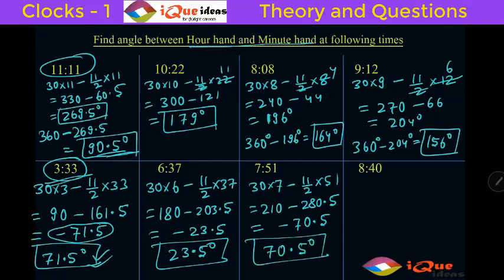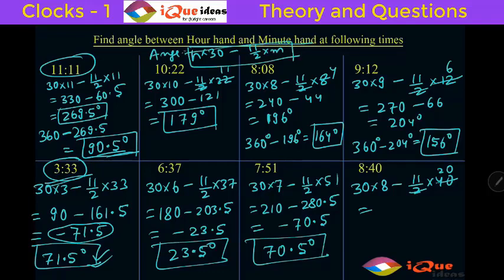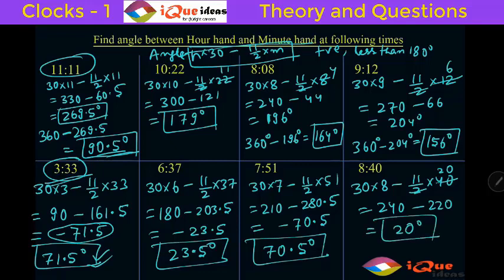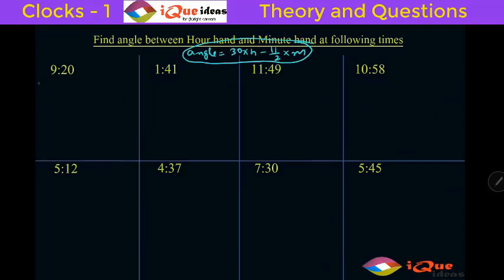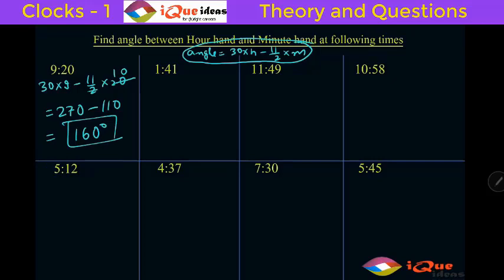For 8:40: 30 times 8 minus (11/2) times 40. Two cancels with 40 giving 20, so 240 minus 220 = 20 degrees — a positive answer. By now you should have memorized the formula: angle = 30h minus (11/2)m. Always take the positive value less than 180. If more than 180, subtract from 360; if negative, remove the minus sign. For 9:20: 30 times 9 minus (11/2) times 20. Two cancels with 20 giving 10, so 270 minus 110 = 160 degrees.